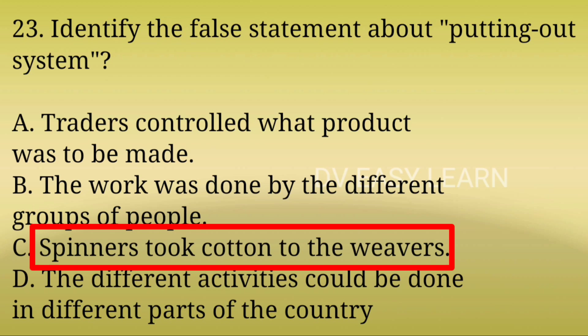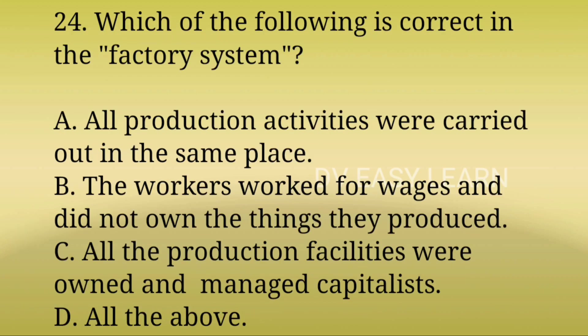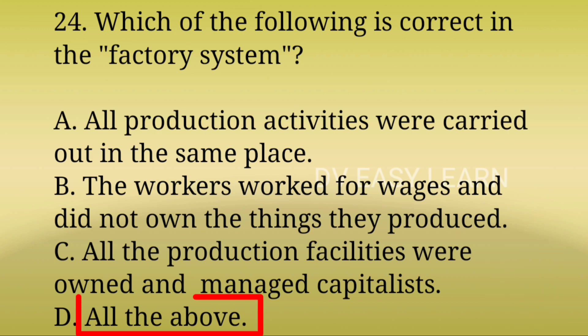24th Question: Which of the following is correct in the factory system? Correct answer: All of the above — all production activities were carried out in the same place, the workers worked for wages and did not own the things they produced.